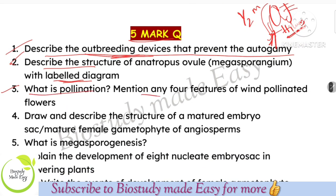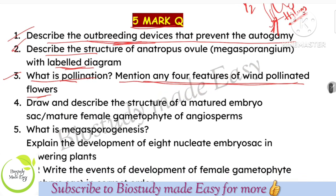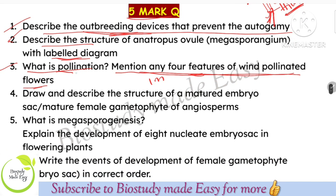What is pollination? Mention any four features of wind-pollinated flowers. Pollination is the transfer of pollen grains from the anther to the stigma. For wind-pollinated flowers, mention four features — each feature carries one mark, plus one mark for the definition. Total five marks.